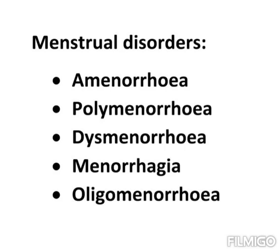The term starting with 'A' means absence. So what is amenorrhea? Absence of menstruation is called amenorrhea. If menarche or puberty does not appear till the age of 18, it is called primary amenorrhea.